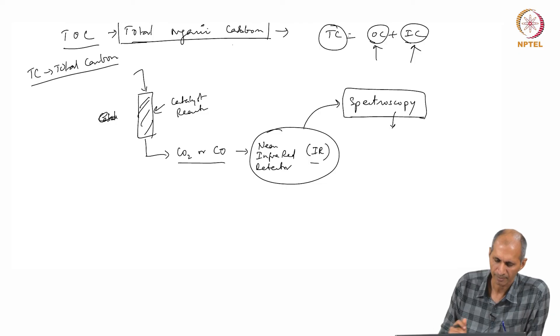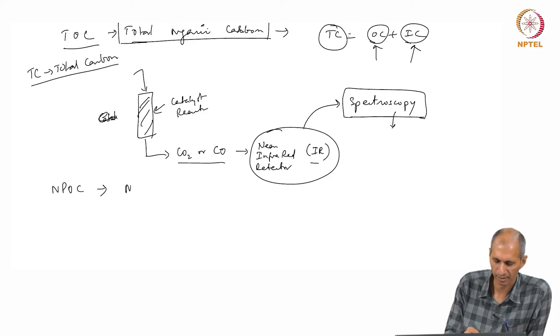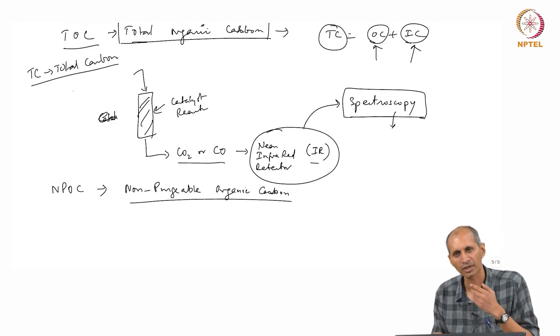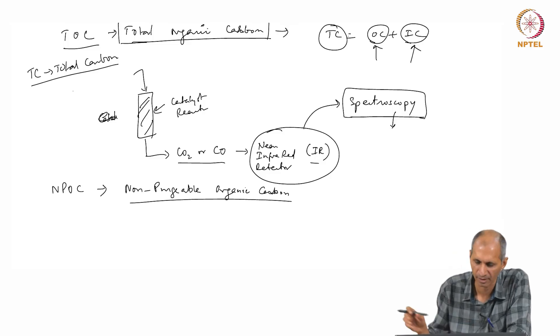In this, there is another category called NPOC, which is called non-purgeable organic carbon. What this means is that you are still doing the same thing—adding a sample—but before it goes in, you purge your sample. Any volatile organic compounds are all gone; they are taken away. Whatever is there is the non-volatile part, which is then sent through that catalyst, and then carbon dioxide comes out.